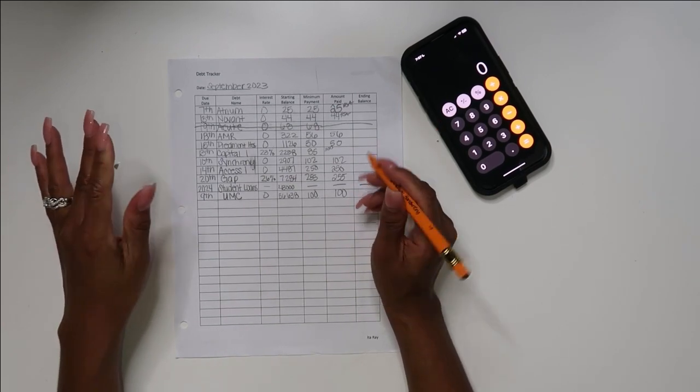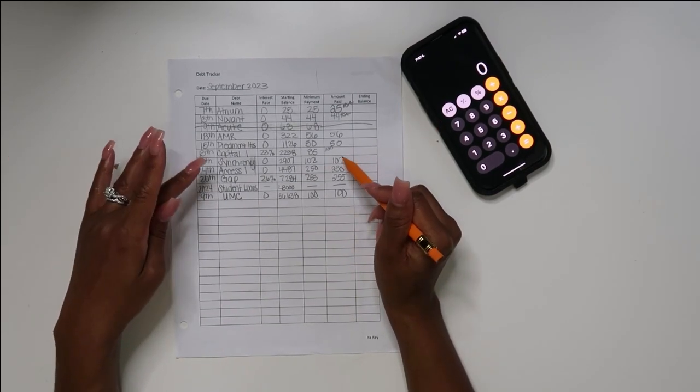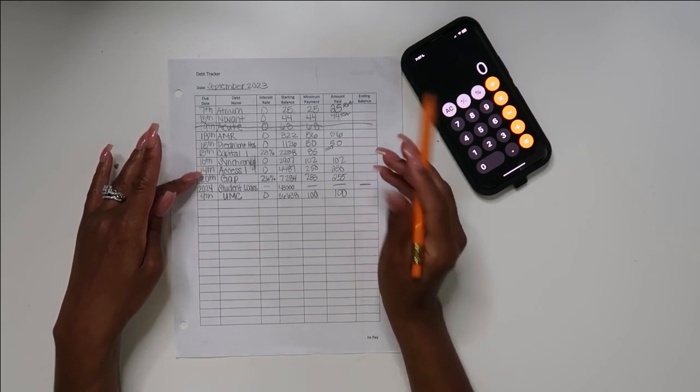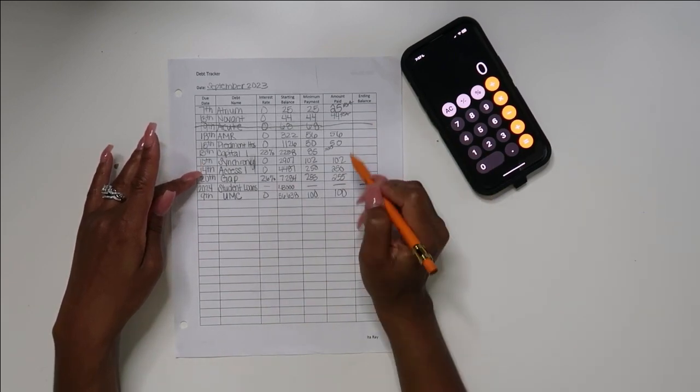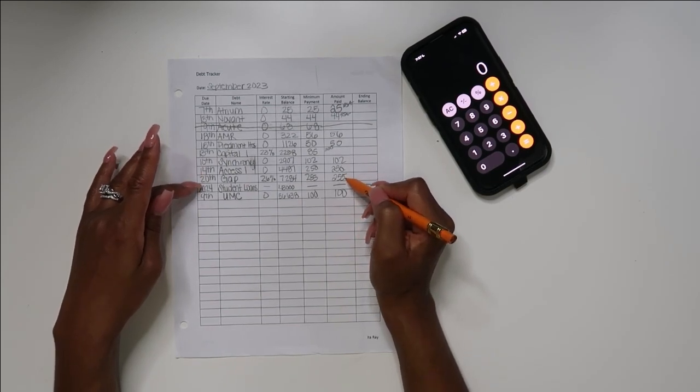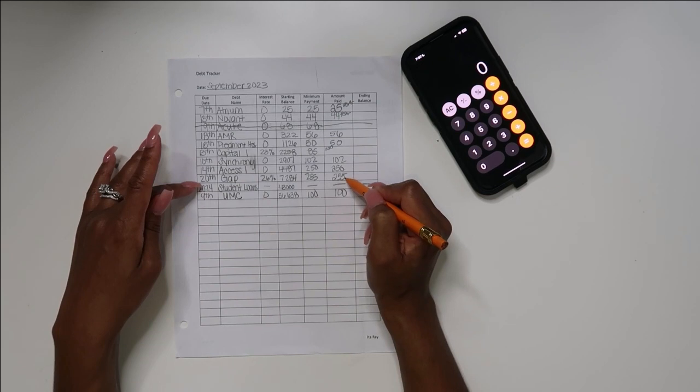Synchrony I paid $102 towards it so far. I don't know if my husband's going to put towards it, we'll see. Access One I paid $250 towards it. Gap, y'all this Gap, I cannot wait to get this paid off.